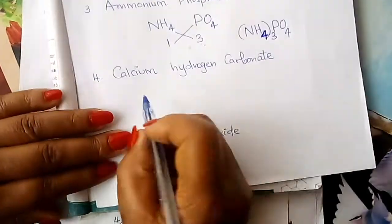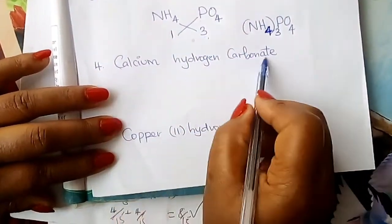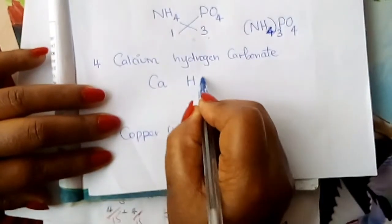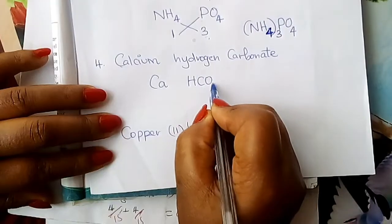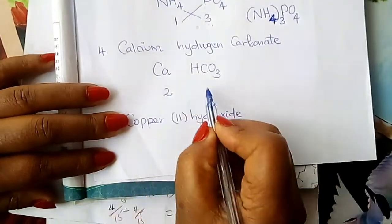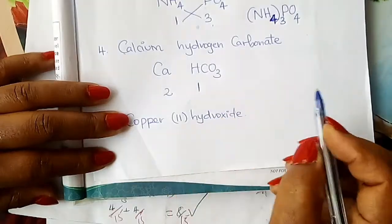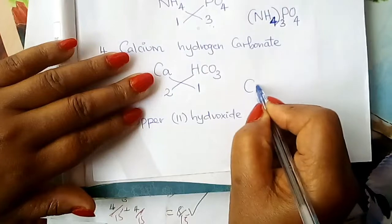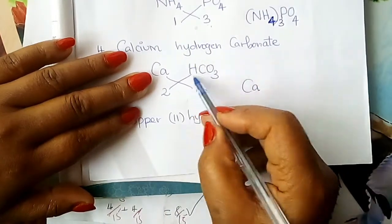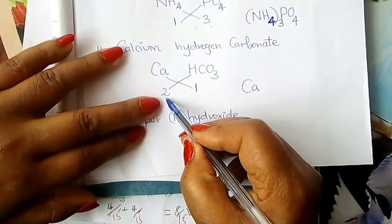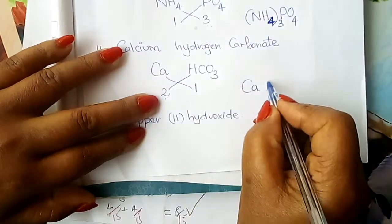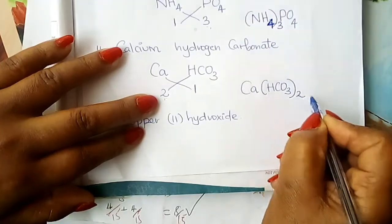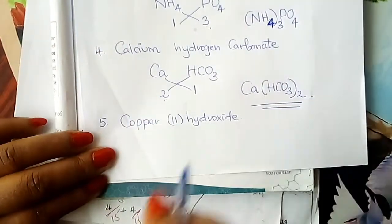Calcium hydrogen carbonate: it has calcium and the hydrogen carbonate radical. Calcium is Ca; hydrogen carbonate is HCO3. The valency of calcium is two; the valency of hydrogen carbonate is one. Interchange: calcium takes one — leave it. Hydrogen carbonate is a radical taking two, so put it inside a bracket and fix the two. The formula is Ca(HCO3)2.